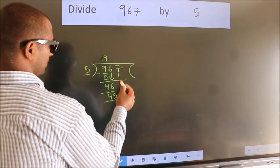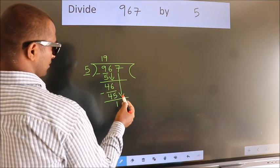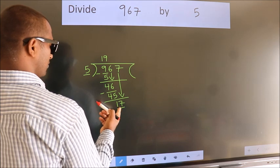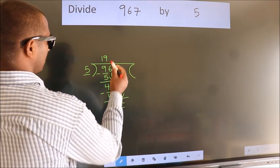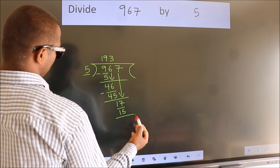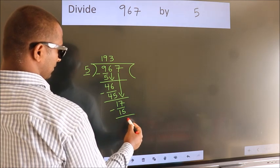After this, bring down the beside number. So, 7 down. So, 17. A number close to 17 in the 5 table is 5 threes 15. Now, we subtract. We get 2.